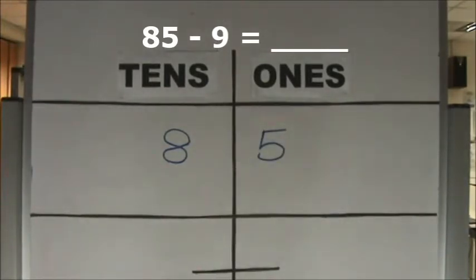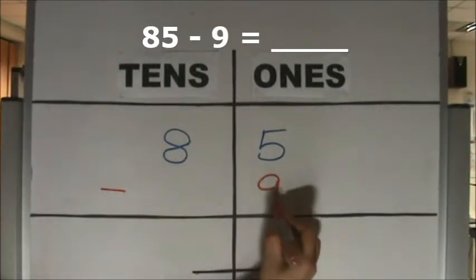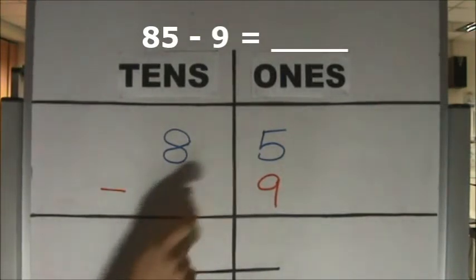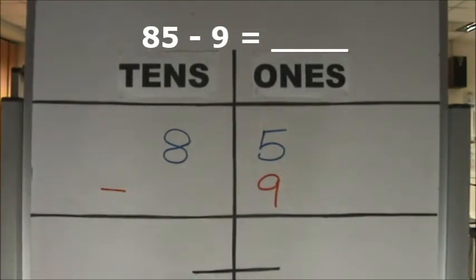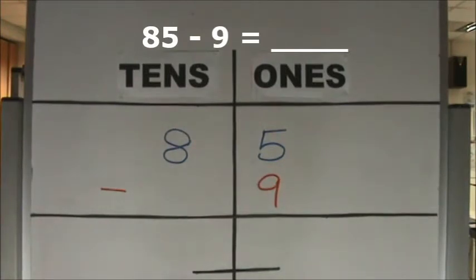We need to take away 9 ones. Minus 9. Are there enough ones to take away 9 ones? There are 5 ones. There are not enough ones to take away 9 ones.